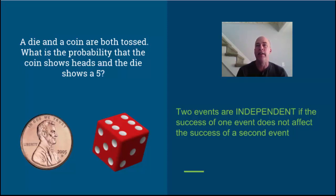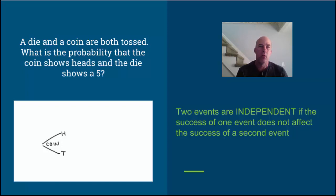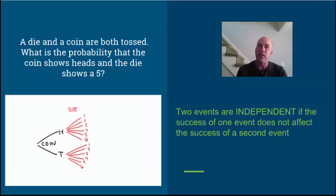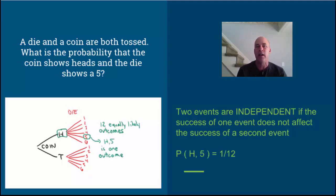One way to investigate this is by making a tree diagram. We could first look at how the coin behaves - we could get heads or tails. From there, if we get heads there are six different outcomes for the die, and same if we had tails on the coin. We could multiply these out and see there's a total of 12 different outcomes, and only one of them gives what we'd like: the heads and the 5.